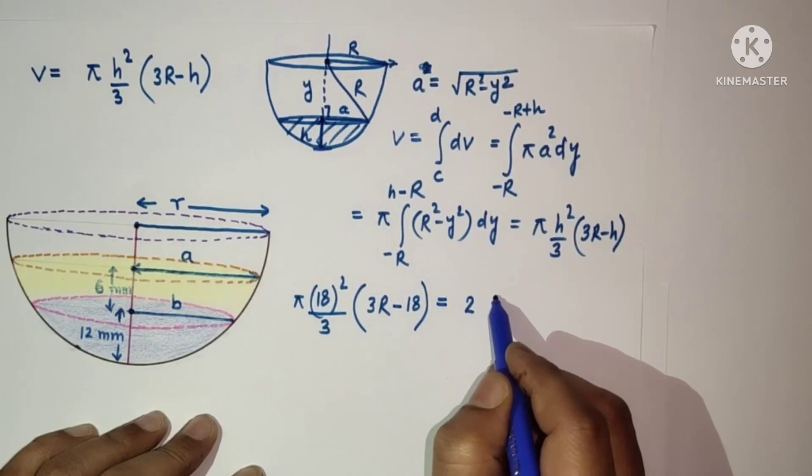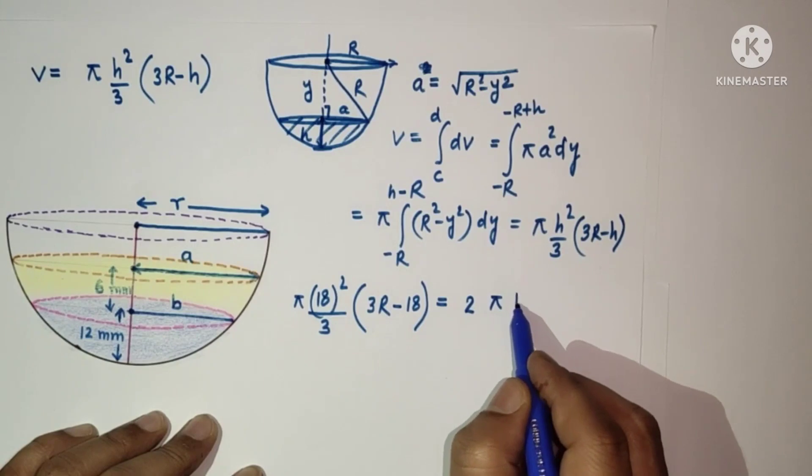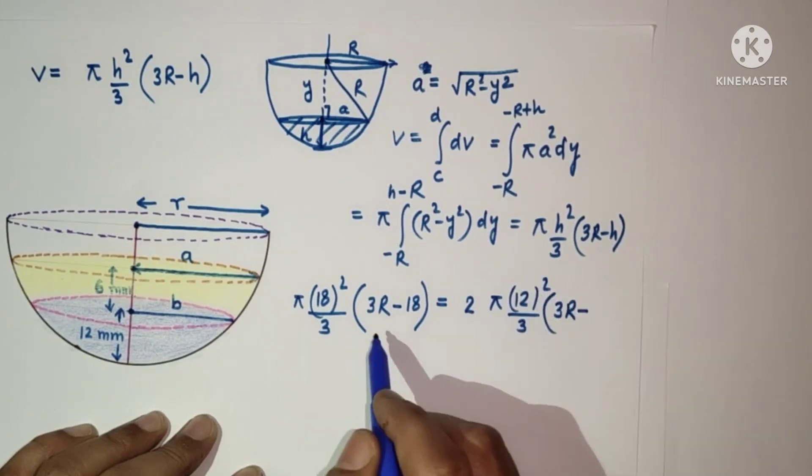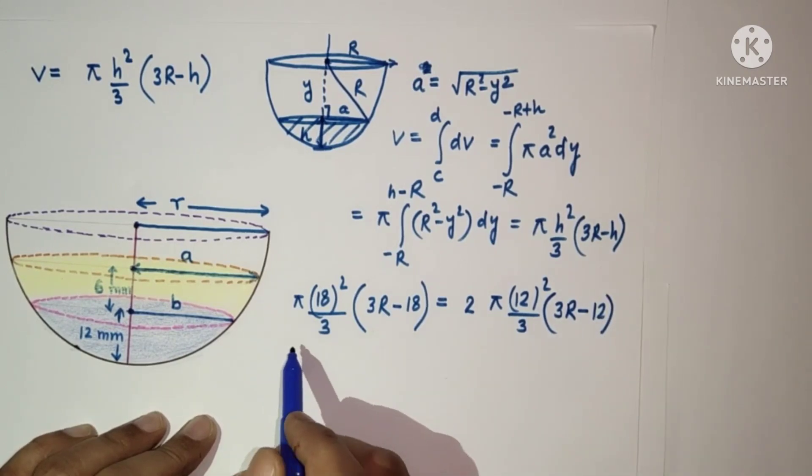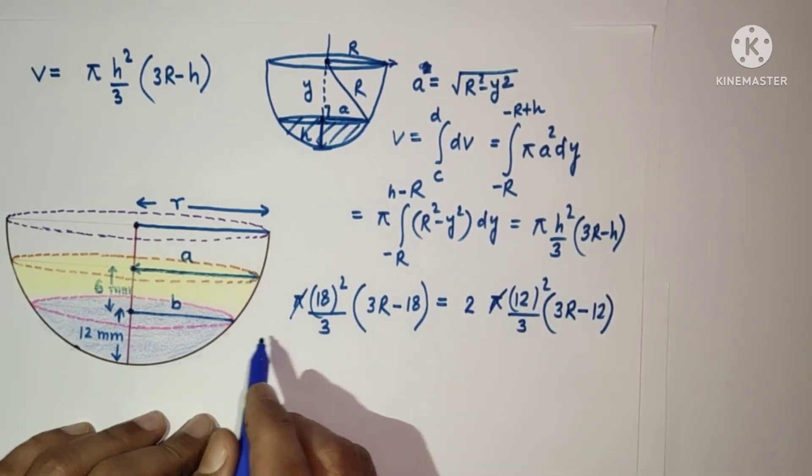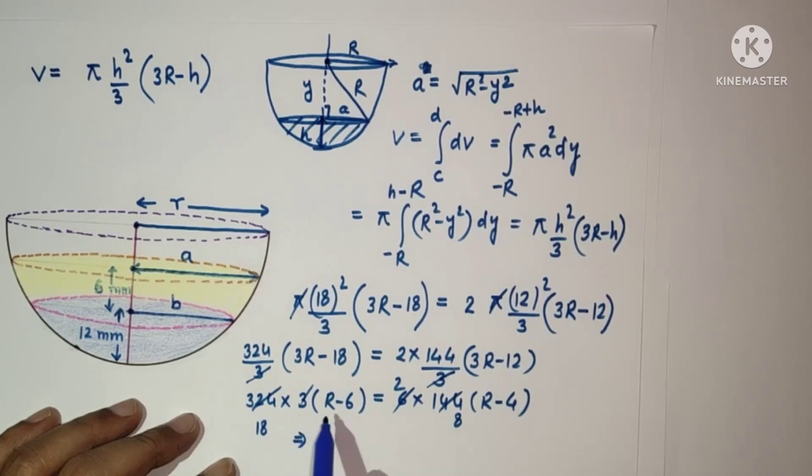Pi cancels out. After simplification, 18R minus 108 equals 16R minus 64, which gives 2R equals 44, so R equals 22 mm.